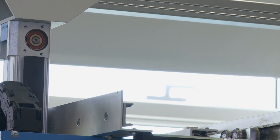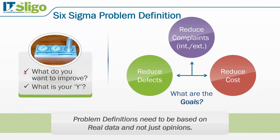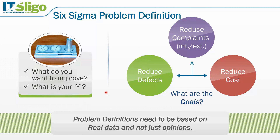Now that we've defined the process and the product, we ask what we want to improve using the function Y as a function of X — the output as a function of the inputs. We could improve quality by reducing defects, reduce internal complaints from downstream processes, or reduce external complaints from customers, and we could try to reduce cost. We need to define the real problem based on real data in the measure phase, not on opinions or the loudest voice. This Y=f(X) equation is fundamental in Six Sigma — we move from the left side to the right side to take control of the process, obtaining knowledge about inputs and outputs as we characterize and then optimize the process by walking through all five DMAIC phases.